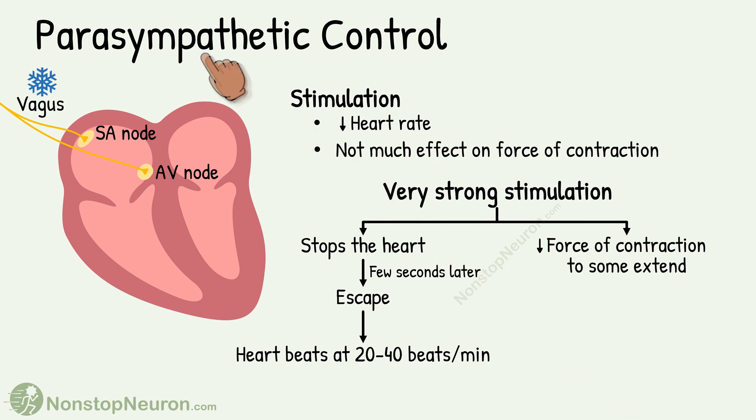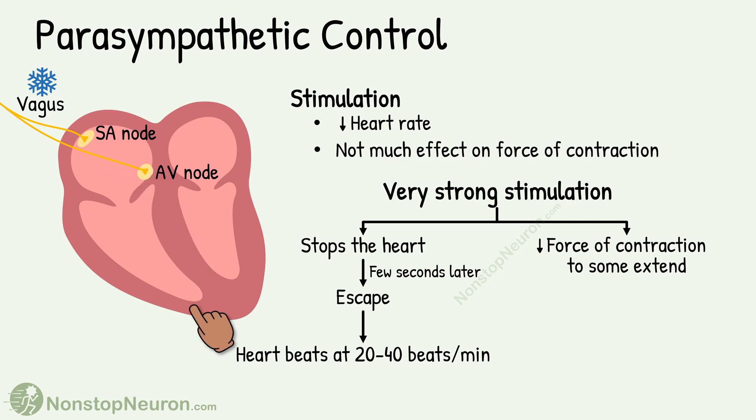Now let's see the control by the parasympathetic nervous system. The heart receives parasympathetic innervation by the vagus nerve. It supplies the SA node and atria, but not the ventricles. This is a very important difference — the ventricular muscles do receive sympathetic innervation, but parasympathetic innervation is not significant.